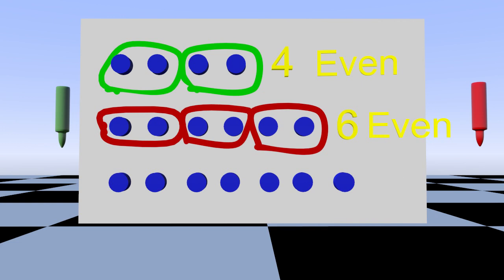Now let's look at this last row. Here's one, two, three, four, five, six, seven. Let's go ahead and put these into pairs to see if we have an even or odd number.